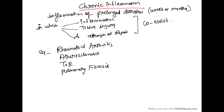Hello everyone. Today we are going to discuss chronic inflammation. As the name suggests, it is the inflammation of a prolonged duration — that is weeks or months — in which inflammation, tissue injury, as well as tissue repair all coexist.